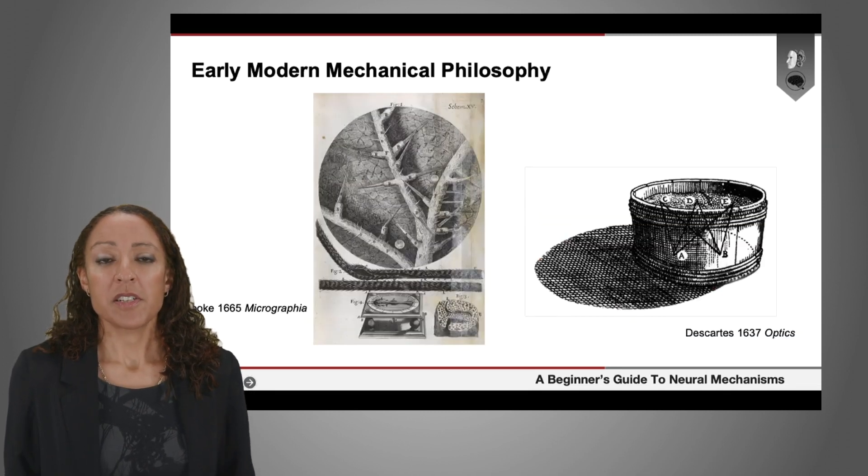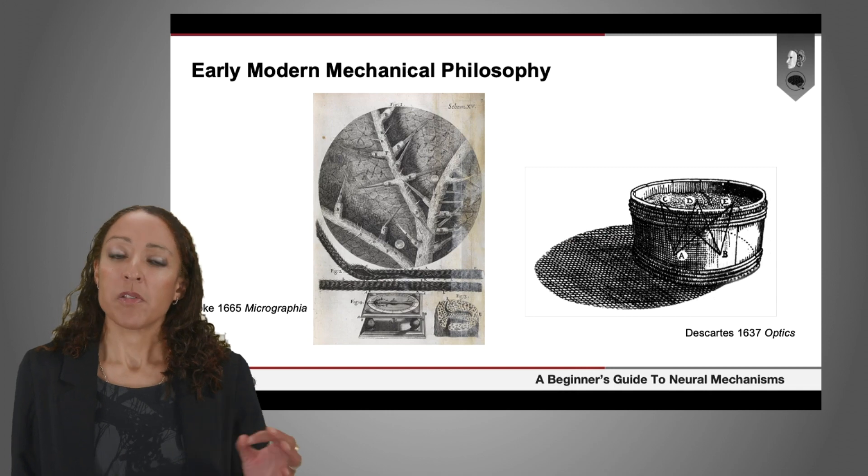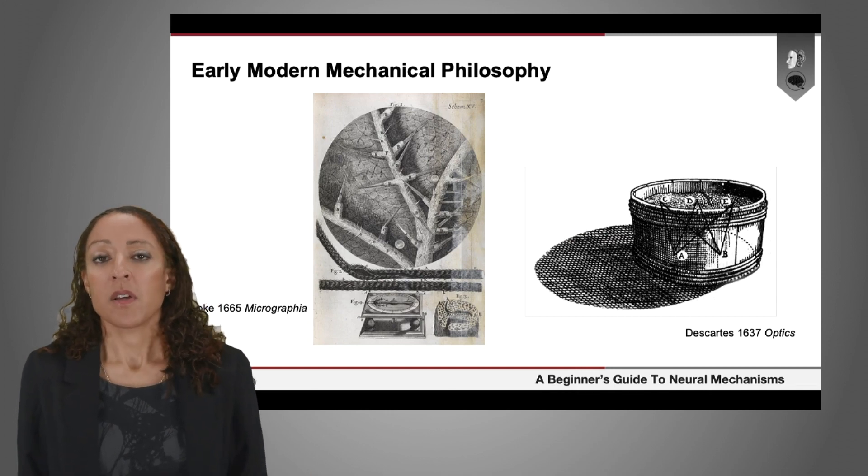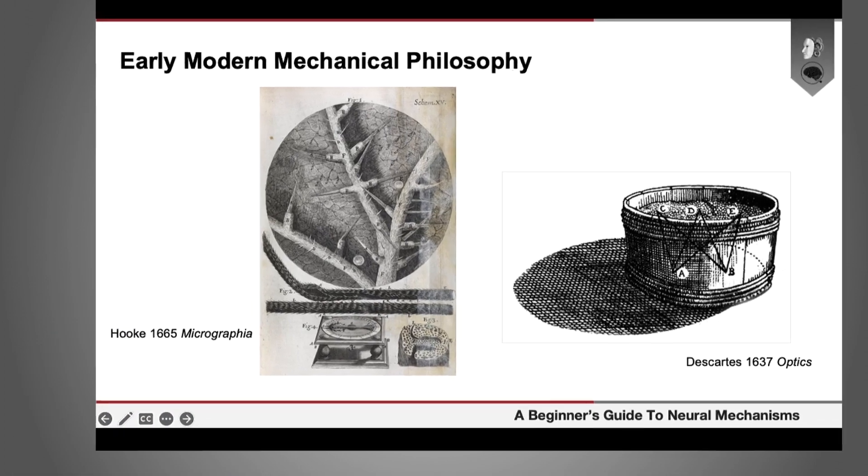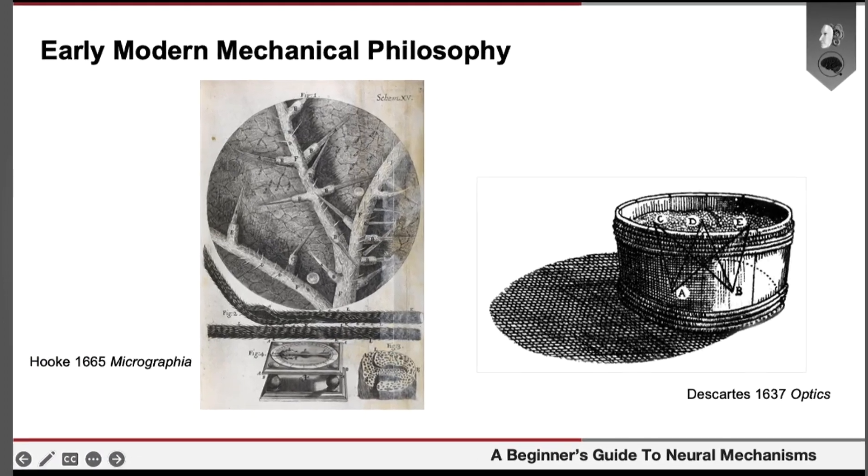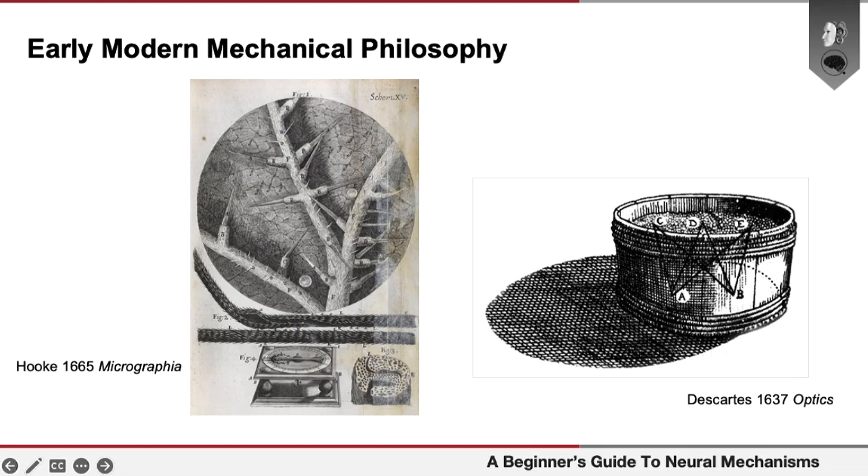This idea that we can think of both living systems and man-made systems as being sets of mechanisms goes back quite a long way to early modern natural philosophy. There was this idea that was introduced in the 17th century by people like Robert Hooke and René Descartes that we could think of the whole of the natural world as made up of tiny particles, and those particles were organized in particular ways which brought about the phenomena that we see in the world around us.